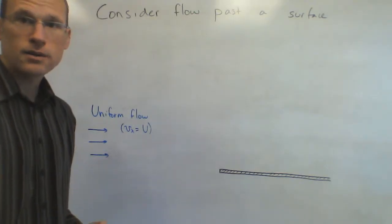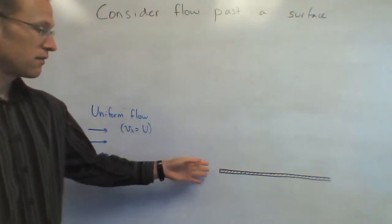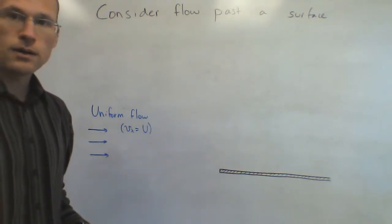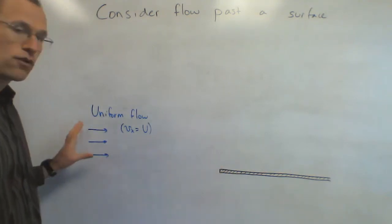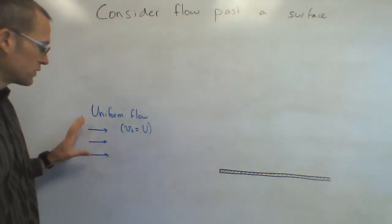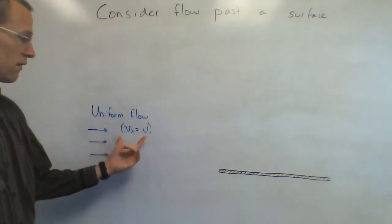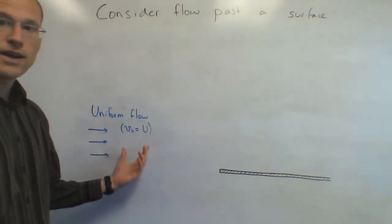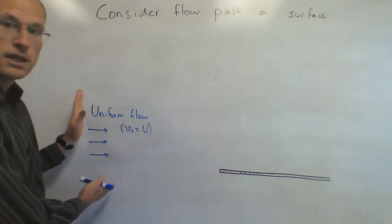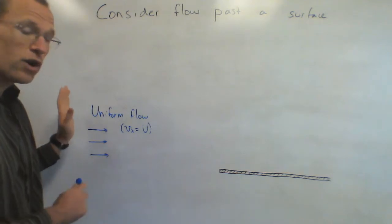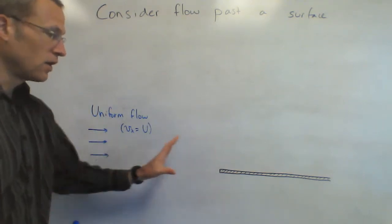To introduce today's topic, I'm going to look at flow past a flat surface. I have some solid object, nice and flat, then I have a uniform flow coming in from left to right. Everything is nice and uniform — velocity equals some value capital U the entire time. I want to know what happens when it hits this plate, so what does this velocity look like over here?